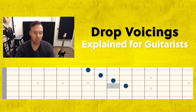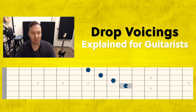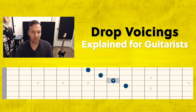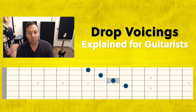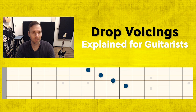We're going to start with this voicing - that is a C major seven chord in close position. This is the root, the third, the fifth, and the major seven. This is just like if you stack up in thirds on a piano keyboard, and that's kind of how we can do it on the guitar.